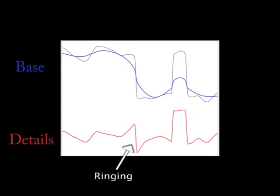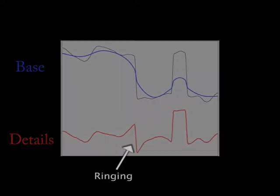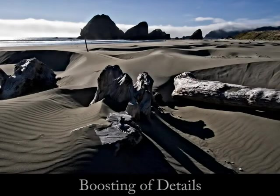This introduces ringing into the detail layer, which can cause halo artifacts to appear when the details are boosted.